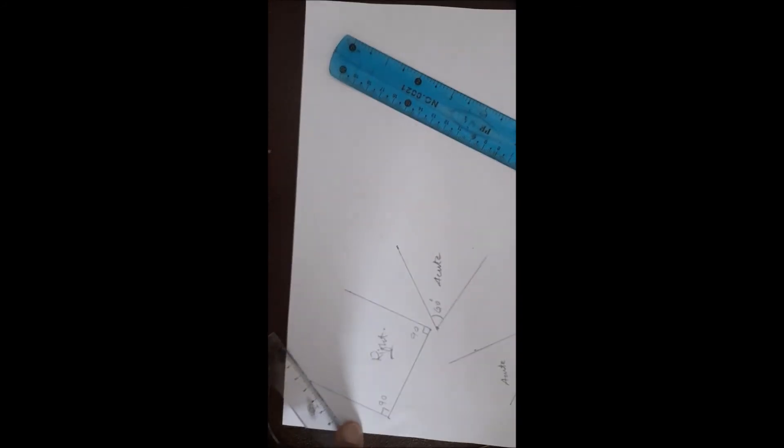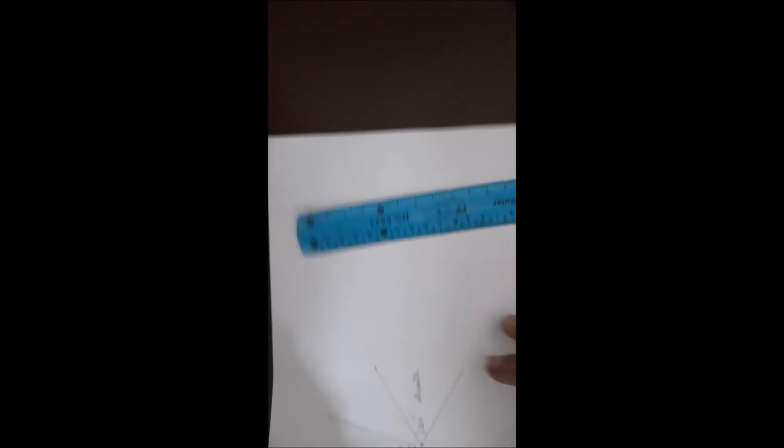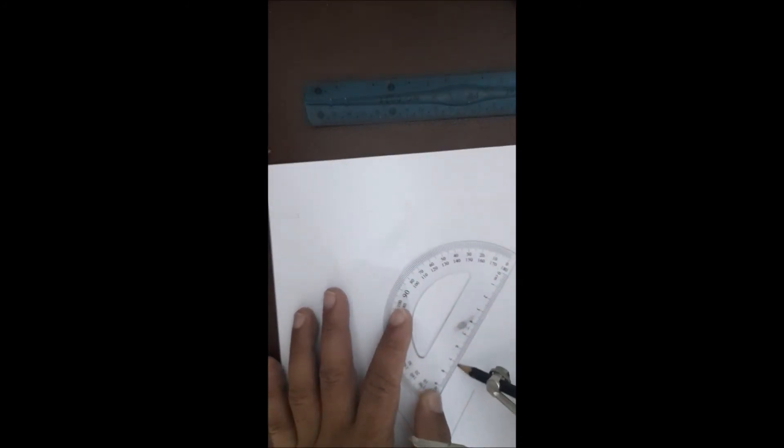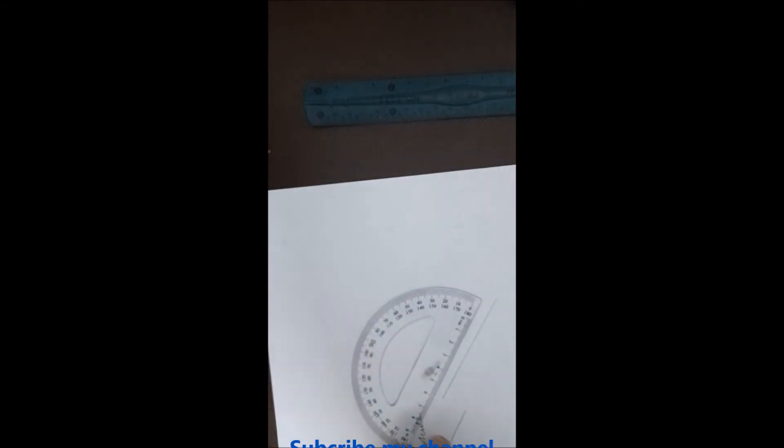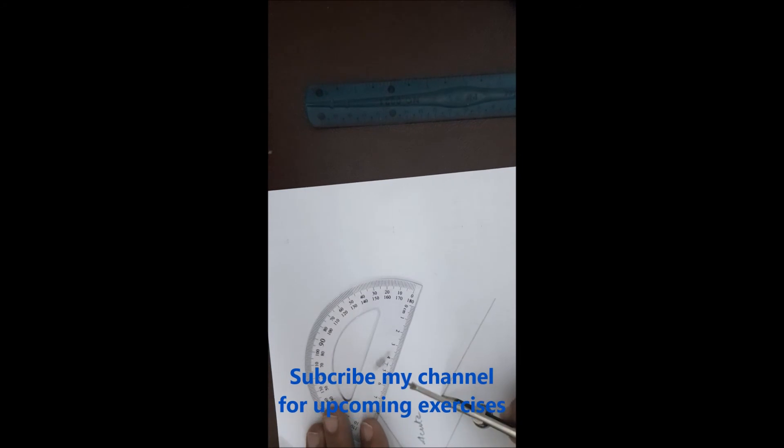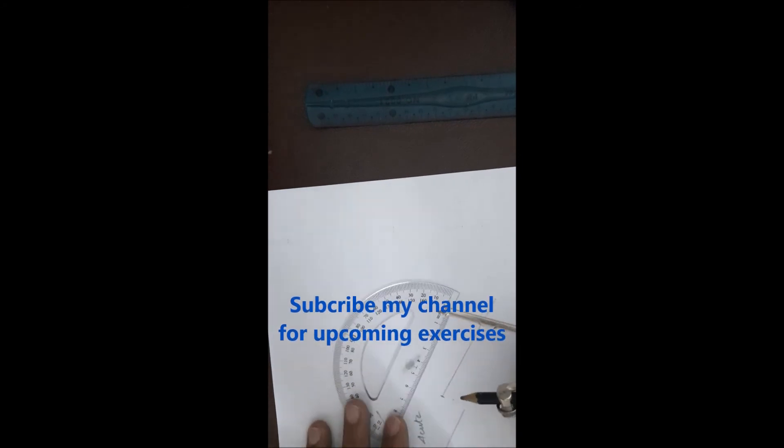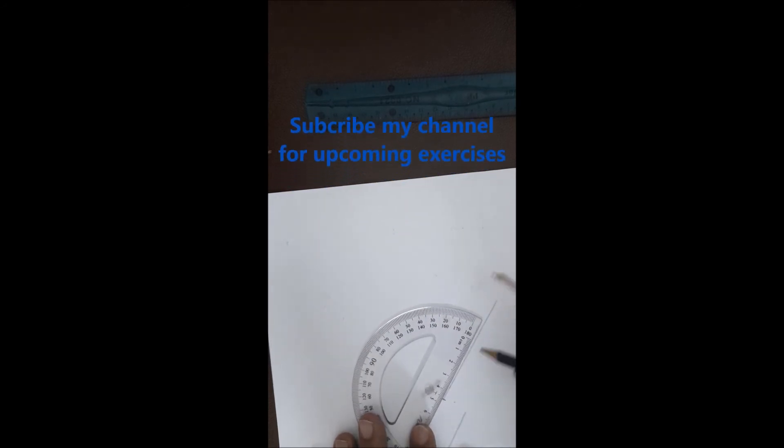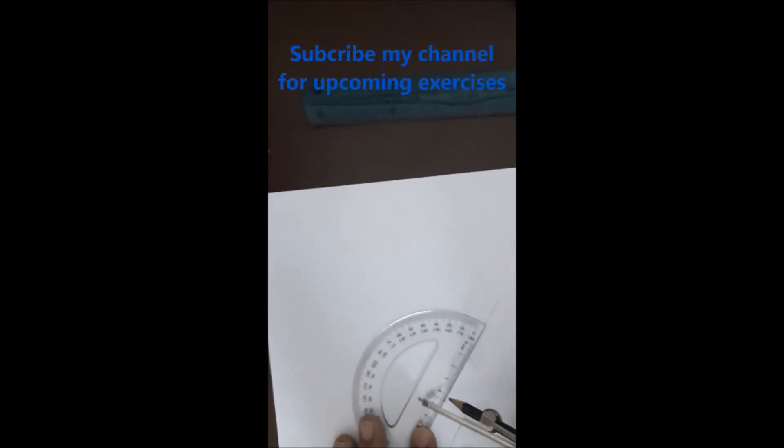Now I would like to show you how to make an obtuse angle. I am going to draw another line, suppose 7 or 8 centimeters. I would like to make it on this side. As you learned a couple of minutes before, if you want to draw an angle on this side, you will start counting from this side.